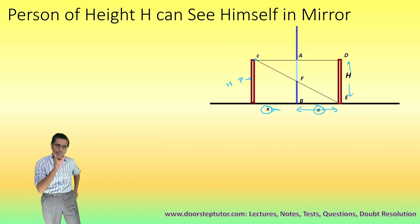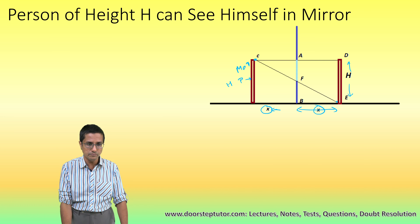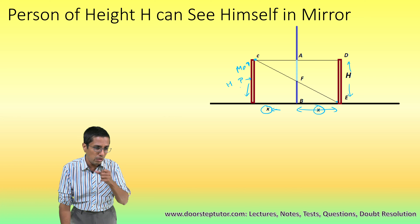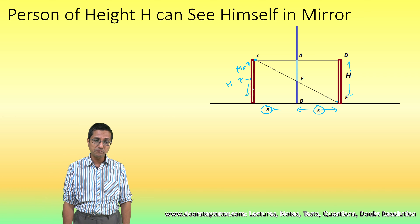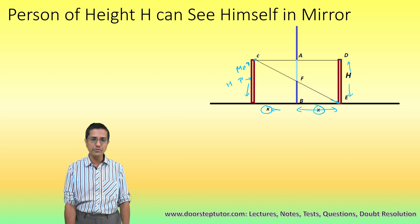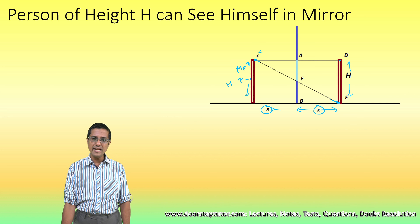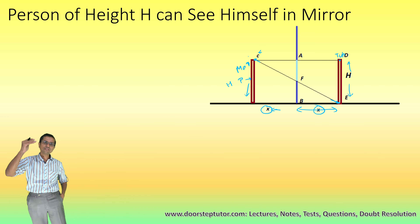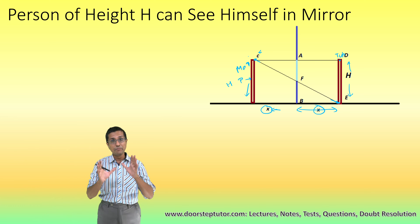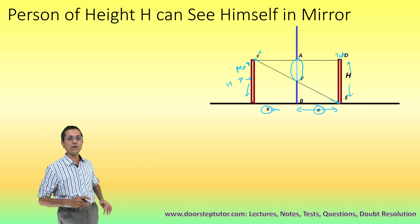For the person to completely see themselves, the light ray from the feet of the image (line CE) must be able to reach them, and the light ray from D — the top of the image — must also be able to reach C, which is the eye. Both the light rays from E and from B should be able to reach C. The minimum height of the mirror needed for this is AF.